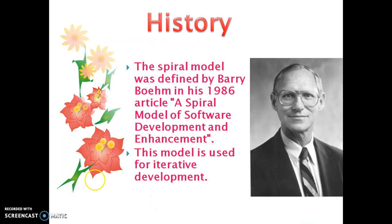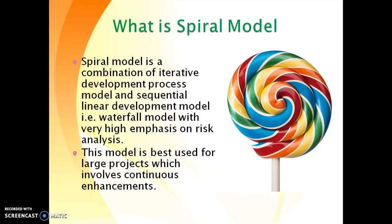The spiral model is an iterative process model. It was introduced by Boehm in 1986. The spiral model consists of many cycles of software development. It is an iterative process model which combines the features of the waterfall model and the prototyping model. This is advantageous for large, complex, and expensive projects. It also guides and measures the need of risk management each cycle.